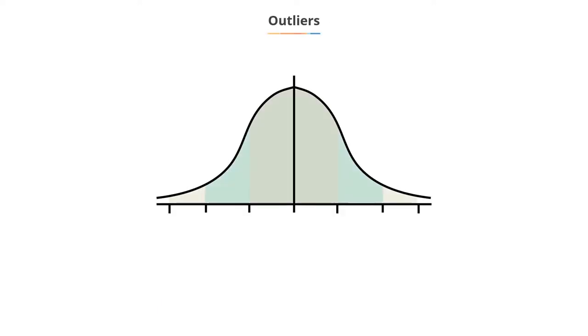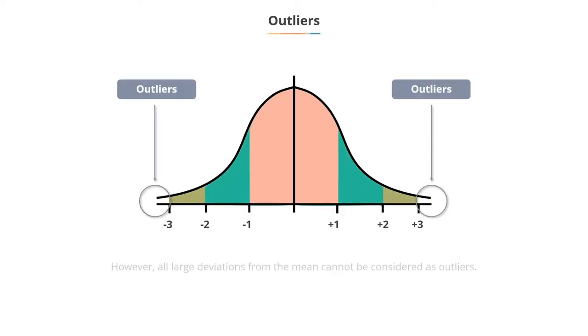However, when Z-scores lie outside the range minus 3 to 3, there is a strong possibility of an outlier. But you cannot consider all large deviations from the mean as outliers.